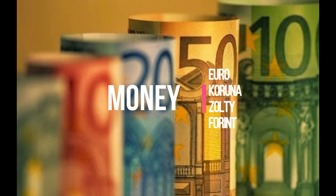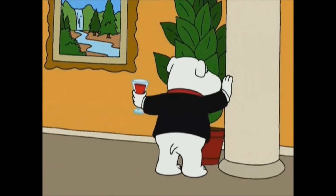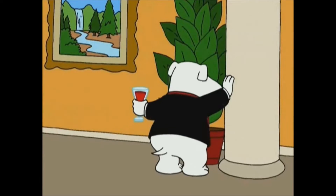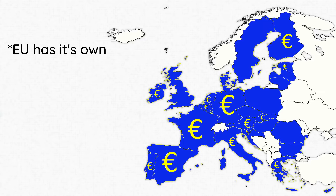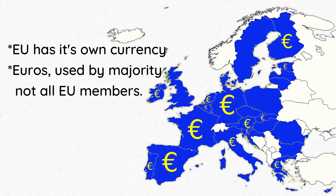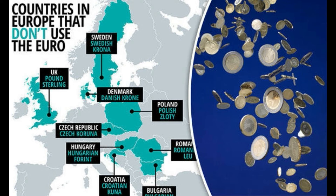Let's talk money. The EU has its own currency — the euro — used by the majority, but not all EU members. Certain countries like Poland, Sweden, Denmark, Hungary, Czech Republic, Croatia, Bulgaria, and Romania have their own currency even though they are in the EU region.